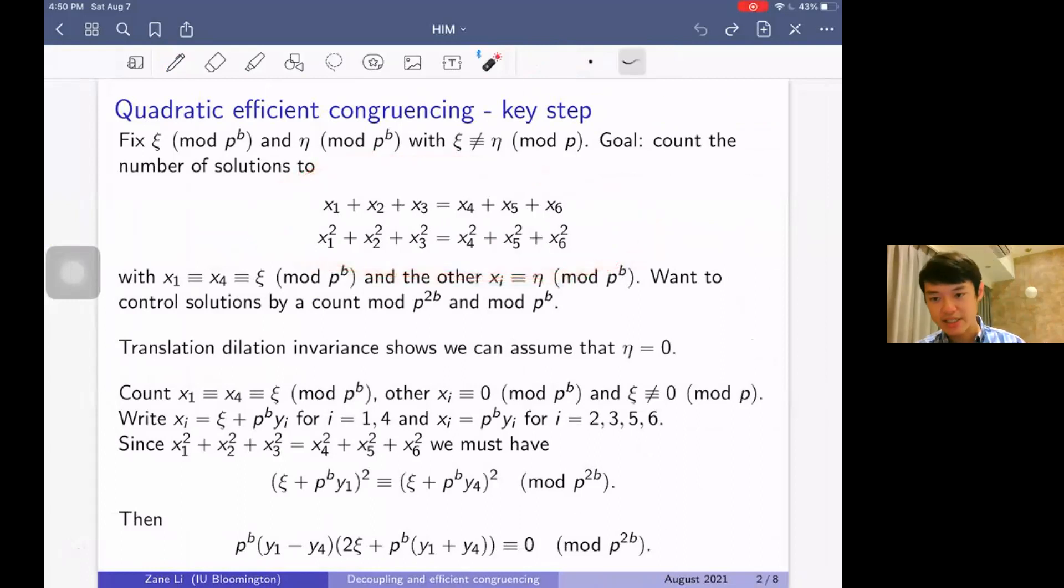In other words, the efficient congruencing proof of counting solutions to this system where the x_i's lie between one and x. The key step in that case is the following: we're going to fix the residue class ζ mod p^b and η mod p^b, with ζ ≠ η mod p. The goal will be to count the number of solutions to this system.